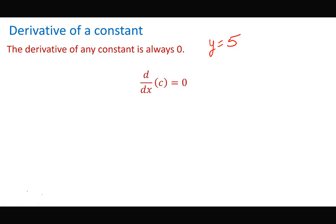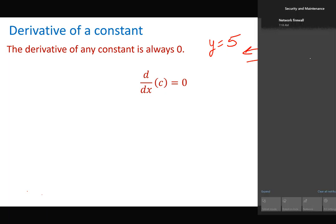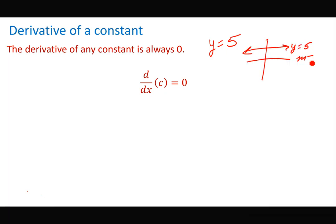If I had some function y equals 5 and I were to graph this, it would simply be a horizontal line through 5. What's the slope of a horizontal line? Zero. So here my slope is zero. That means the derivative of a constant is zero, because I'm finding the slope of a horizontal line.